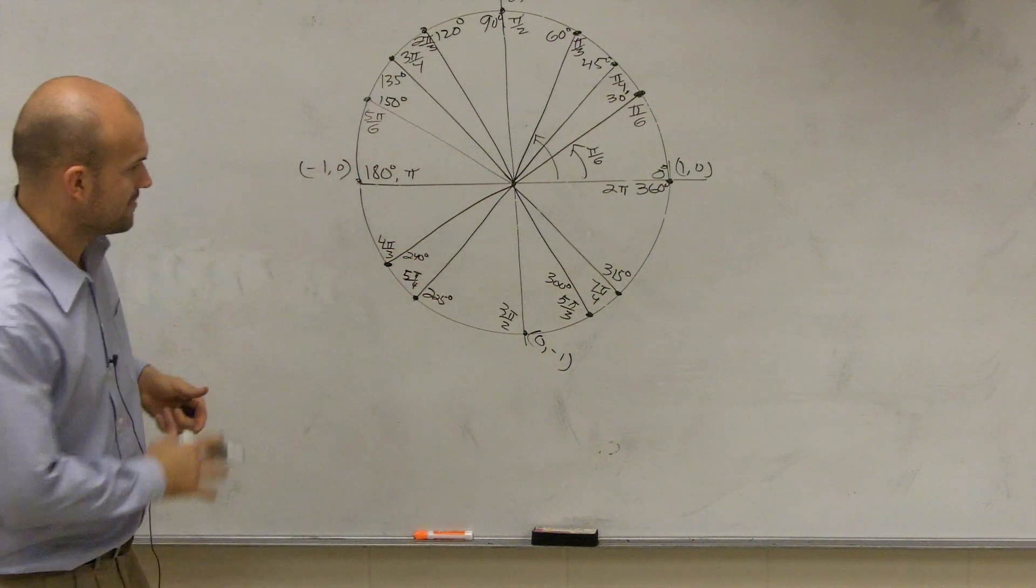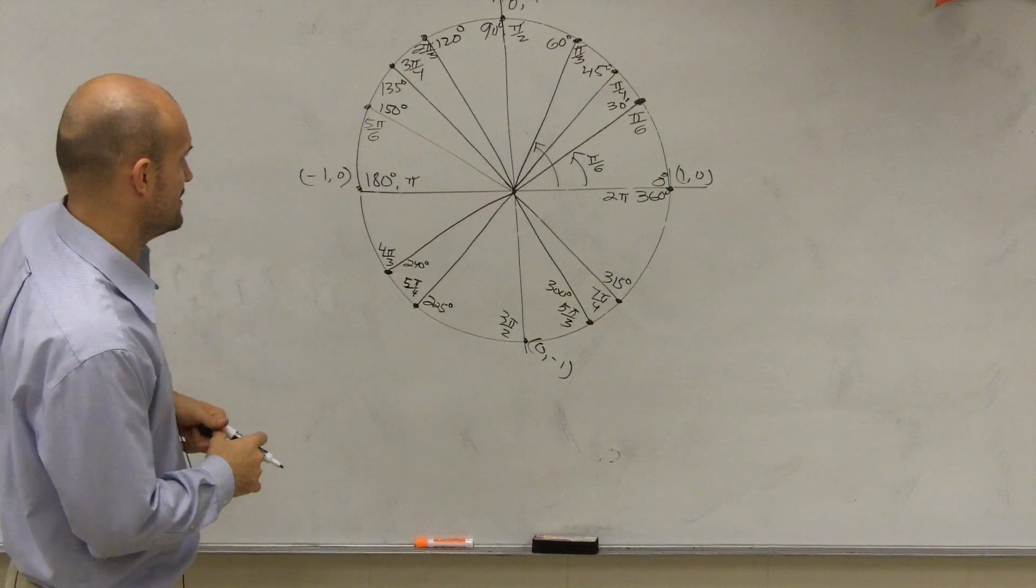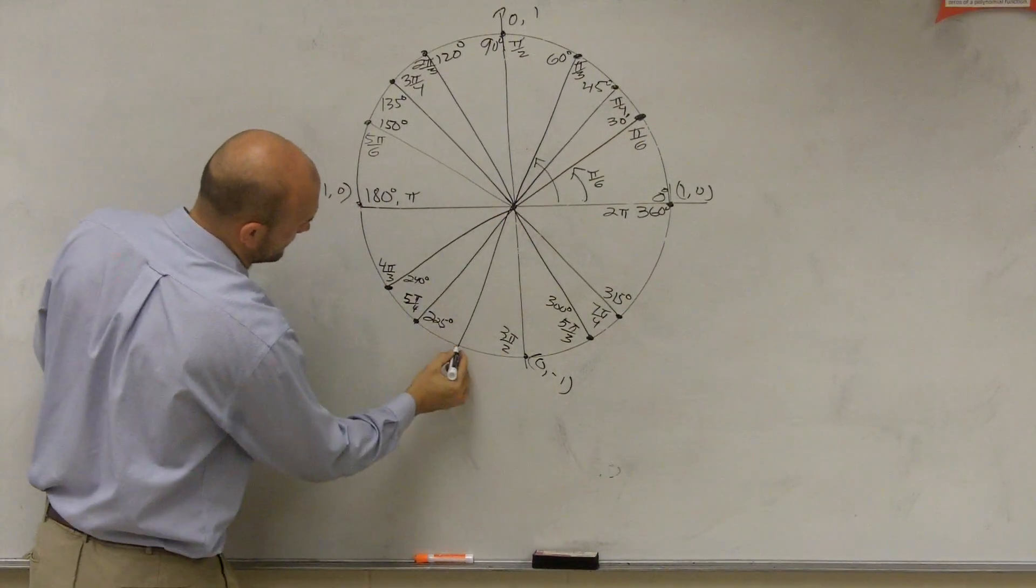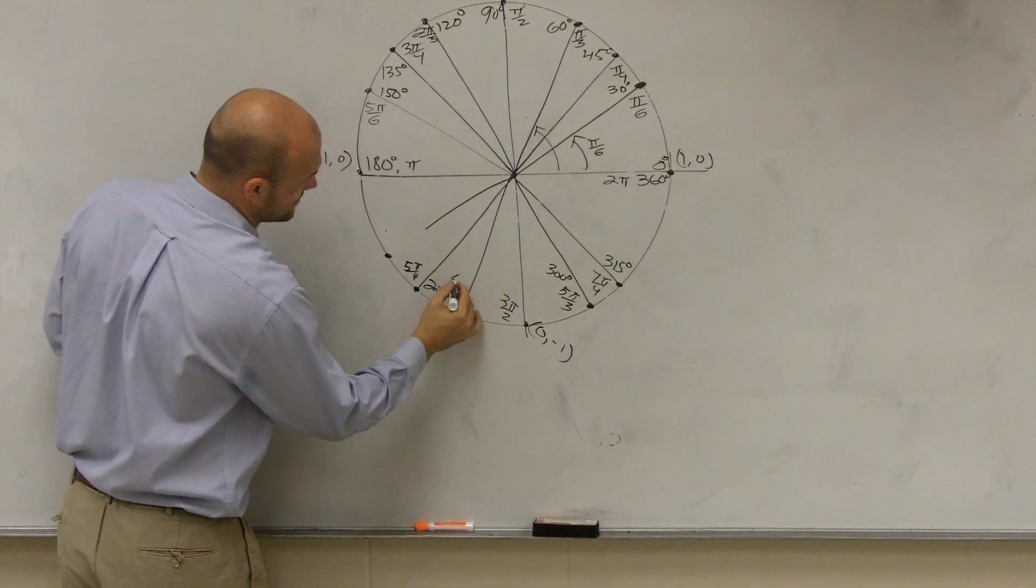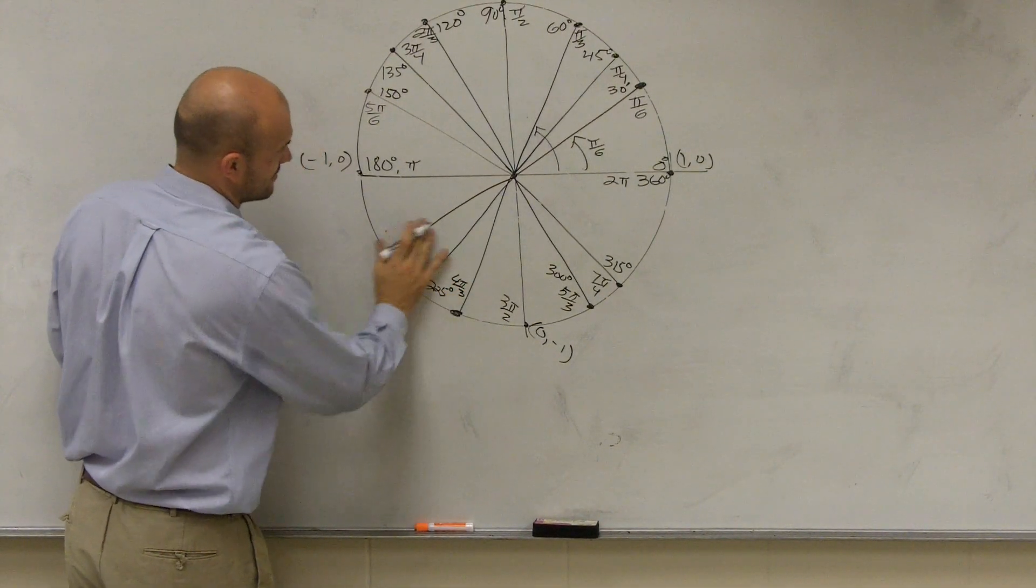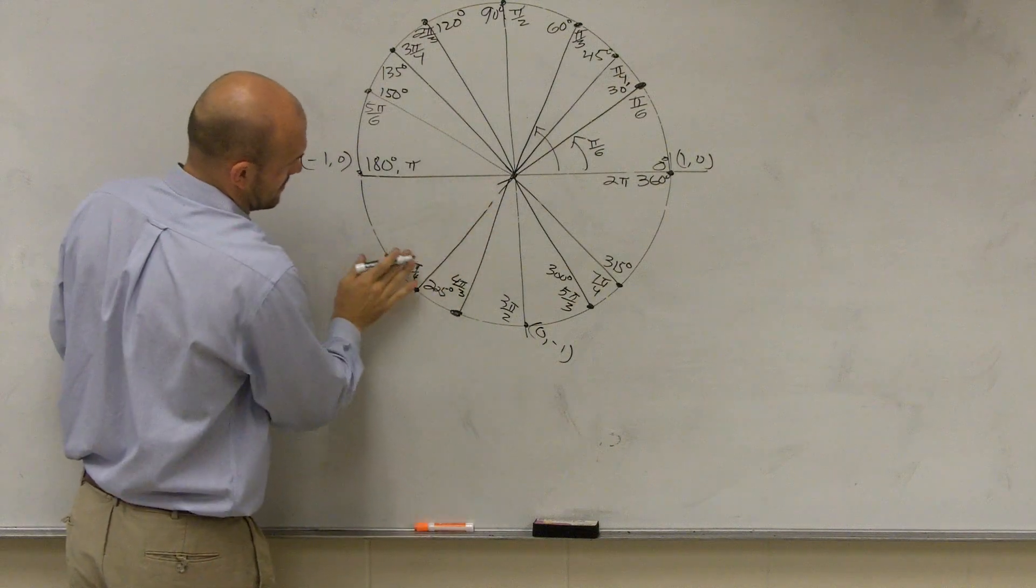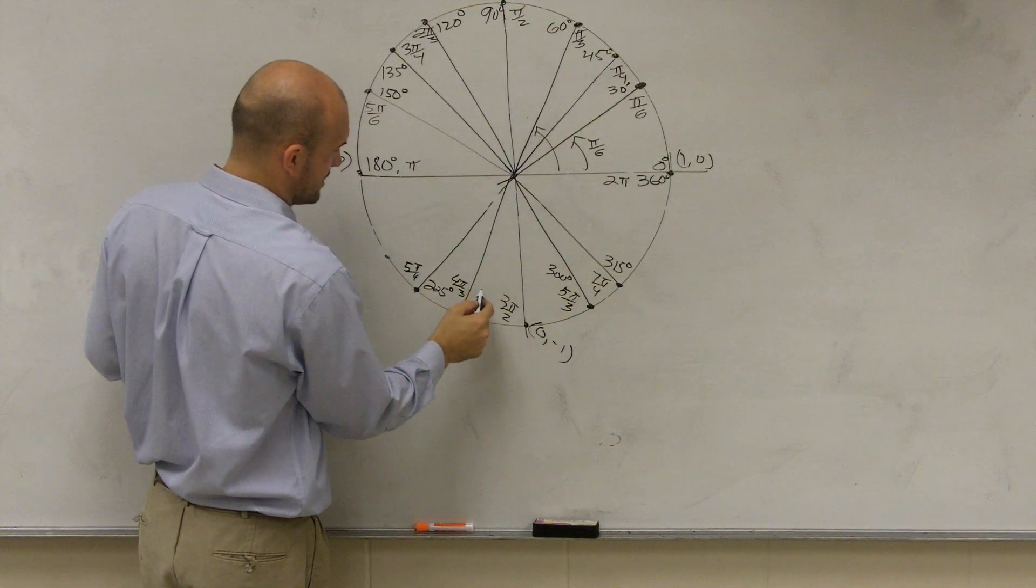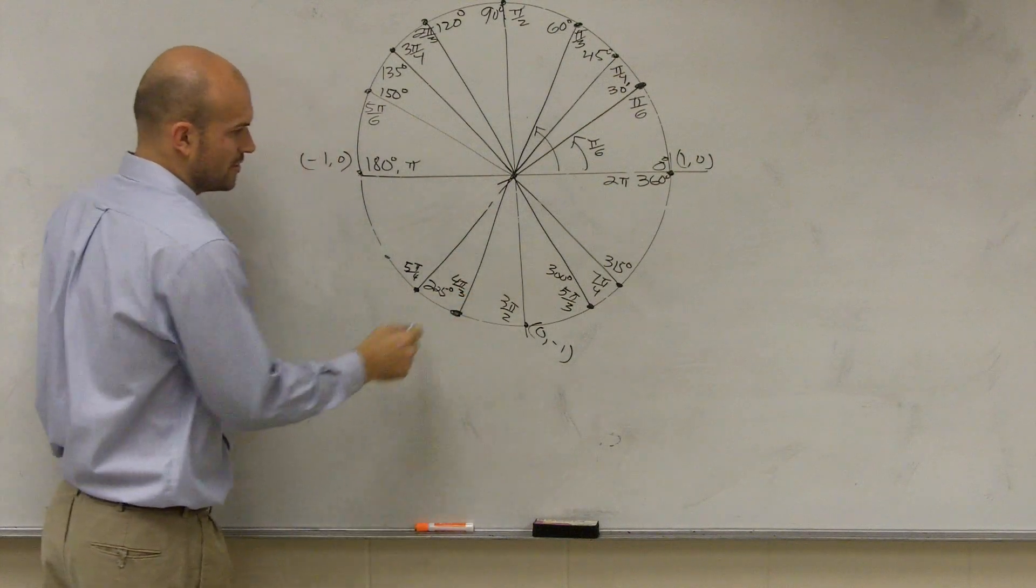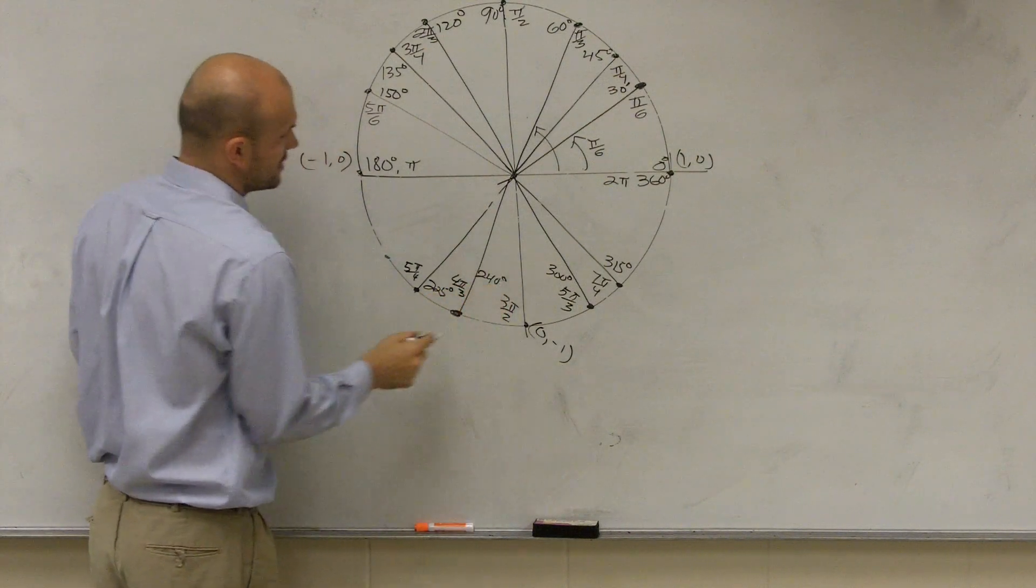Oh, crap. I drew that in the wrong one. I drew this. My bad. That one goes right there. My bad. Sorry about that. That one is 4 pi over 3. Sorry about that. And that would be 240 degrees. Thank you.